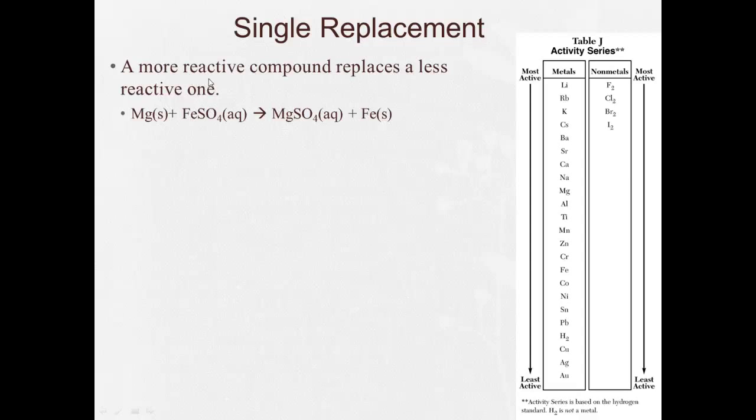Next one I'm going to talk about is what's called single replacement. In a single replacement reaction, a more reactive element replaces a less reactive one in a compound. So here we have magnesium metal and iron sulfate, and the magnesium is more reactive than the iron, so it kicks out the iron, says get out, and we end up with magnesium sulfate and iron by itself.